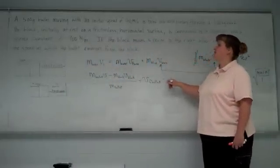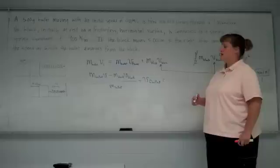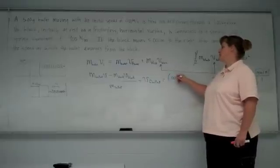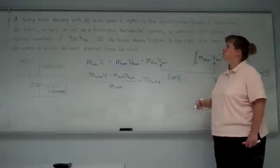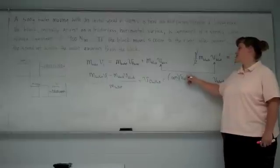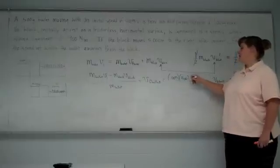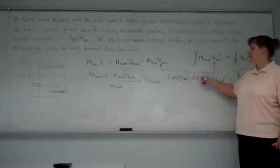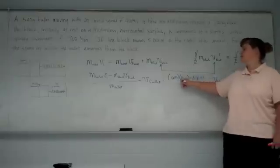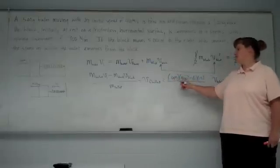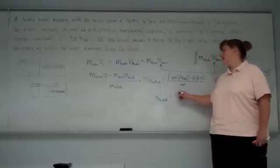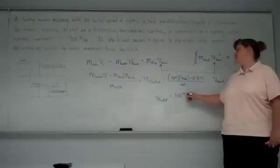So the mass of the bullet is 5 grams. We need it to be in kilograms, so .005 kilograms. Initial speed is 400 meters per second. Mass of the block is 1. The speed of the block we just found out to be 1.5. Mass of the bullet, .005. So the speed of the bullet, finally, ends up being 100 meters per second.